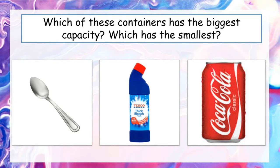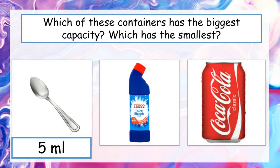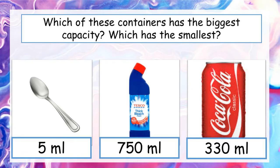It was probably quite easy to estimate which container had the smallest capacity. If you've ever seen these containers before, you would know that a teaspoon can hold a very small amount of liquid. Even without knowing exactly how much, you can confidently estimate it's smaller than a Coke can or a bleach bottle — and you'd be correct, because a teaspoon can only hold 5 millilitres. As for the largest, the bleach bottle holds a lot more liquid than a Coke can, so the bleach bottle is our largest container.